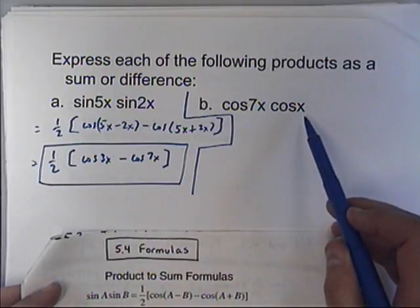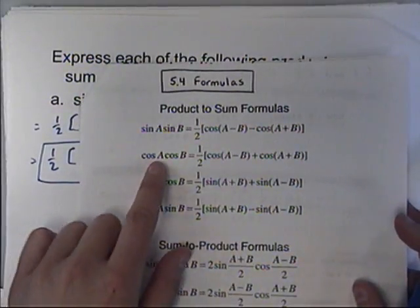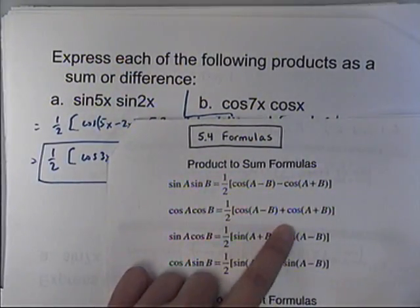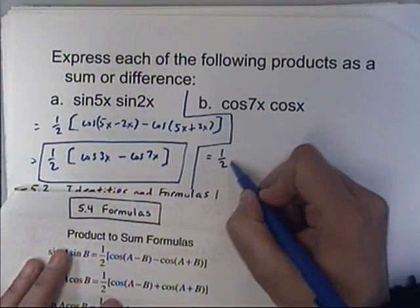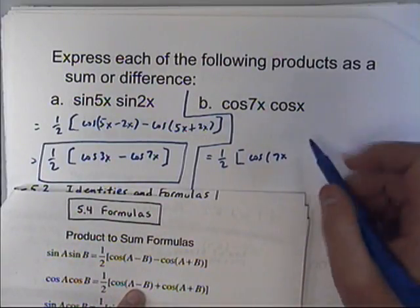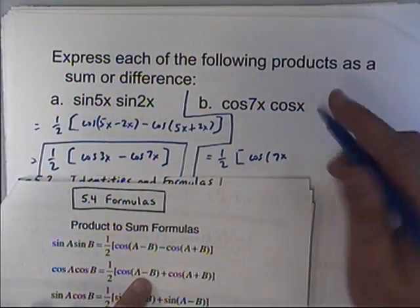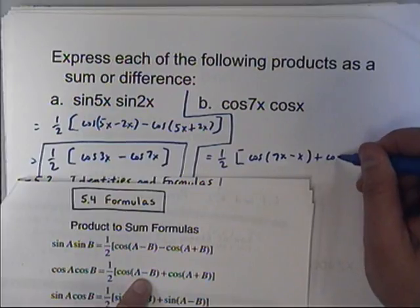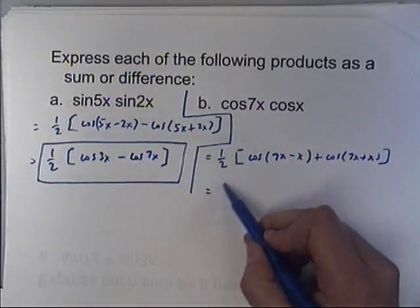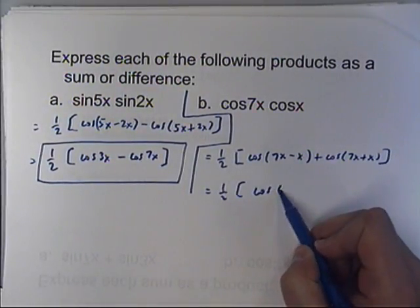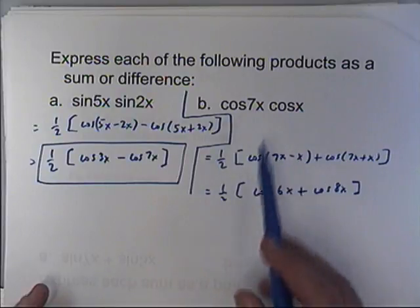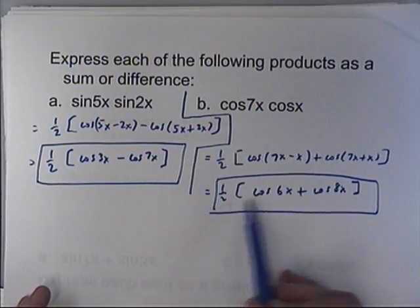Same thing over here — I have the cosine of something times the cosine of something else, which matches the format of cosine A times cosine B on the list. So that equals one half times the cosine of A minus B — which is 7x minus x — plus the cosine of A plus B — so 7x plus x. That is one half times the cosine of 6x plus the cosine of 8x. I've written this, rather than as a product, as a sum.